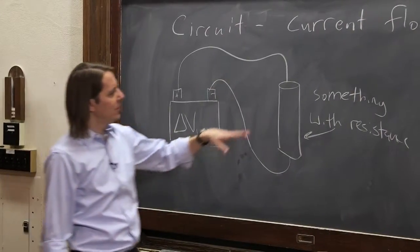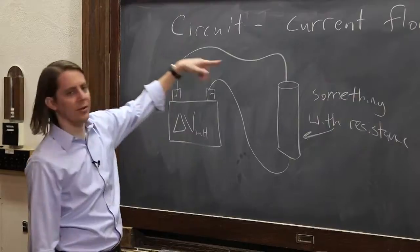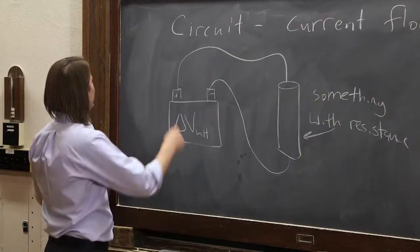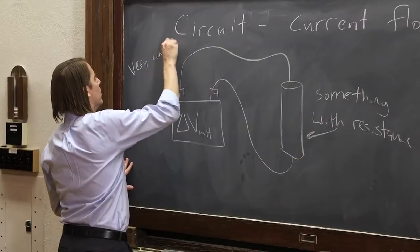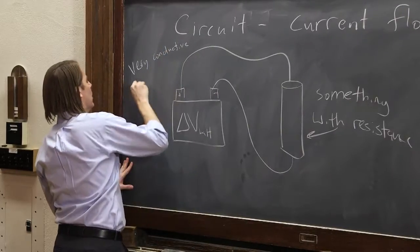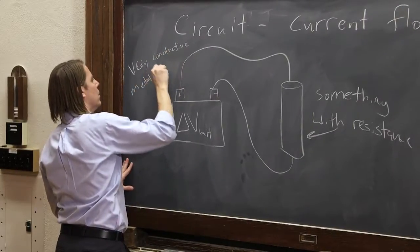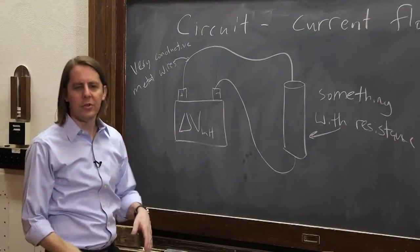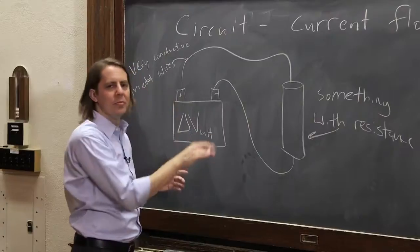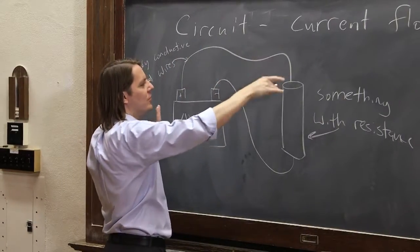So we've got a battery. We've got something with resistance. What about the wires? We've got to think about the wires a little bit. These are very conductive metal wires. So in terms of currents and voltages and resistances, you ignore them. The current just flows through here. You just pretend there's no resistance.